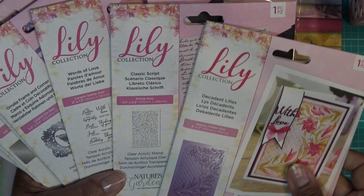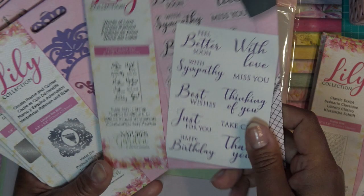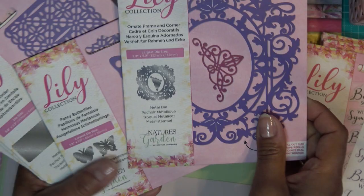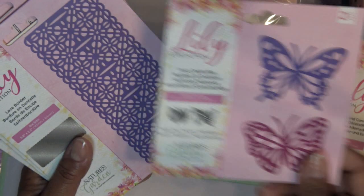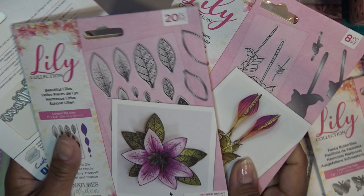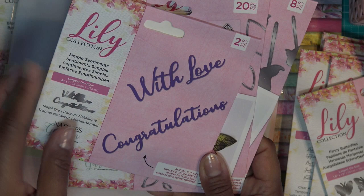So I already went through everything that's in here in the haul. It's the 3D embossing folder, a classic script stamp, some sentiment stamps, ornate frame and corner dies. It's from the Nature's Garden collection, the Lily collection subset. We have some little butterflies, fancy butterflies, lace border. Today I want to focus on this Calla Lily stem and Beautiful Lily's stamp and die sets, and there's also with love and congratulations, some words that you can cut out.